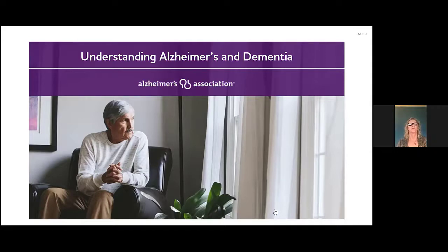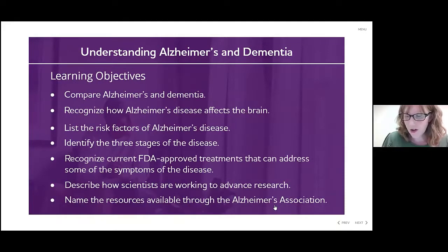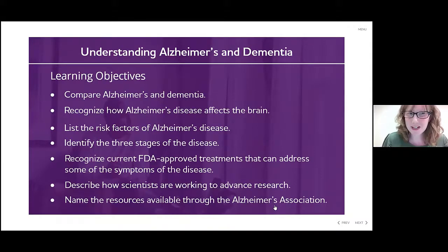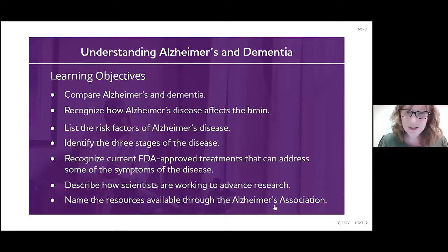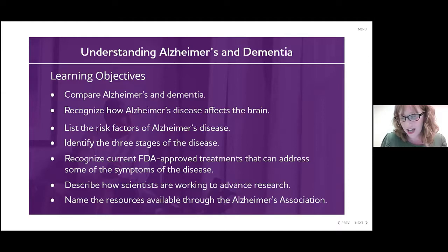We're going to take a top-level look at Alzheimer's disease and dementia to give you a broad understanding. By the end of today's program, we have some learning objectives: we will be able to compare Alzheimer's disease and dementia, recognize how Alzheimer's disease affects the brain, list the risk factors, identify the three stages of the disease, recognize current FDA-approved treatments, describe how scientists are advancing research, and name resources available through the Alzheimer's Association.